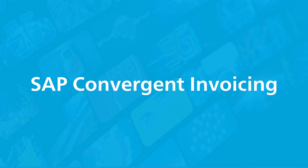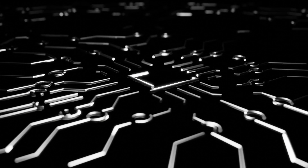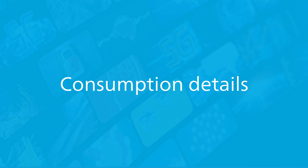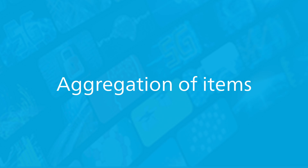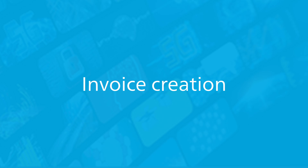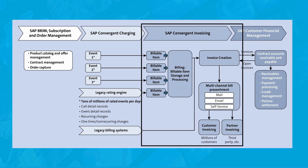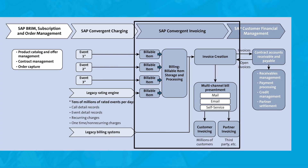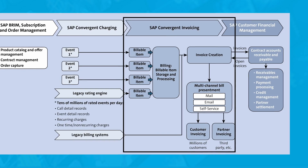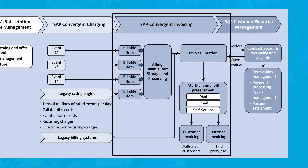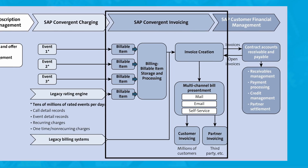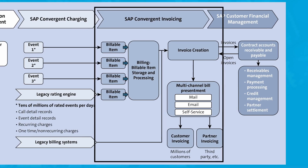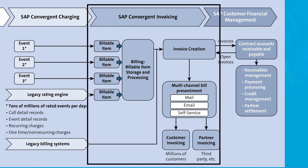SAP Convergent Invoicing's role in SAP Brim is to consume the billable items once they are passed down from SAP Convergent Charging. Once these items reach SAP Convergent Invoicing, the application will handle the process of uploading consumption detail records, storage of billable items, aggregation of billable items, invoice creation, and invoicing the customer. SAP Convergent Invoicing stores and manages rated consumption data records from the SAP Convergent Charging system. The rated consumption data records are also known as billable items and undergo a billing and invoicing process as part of posting of receivables in contract accounting.